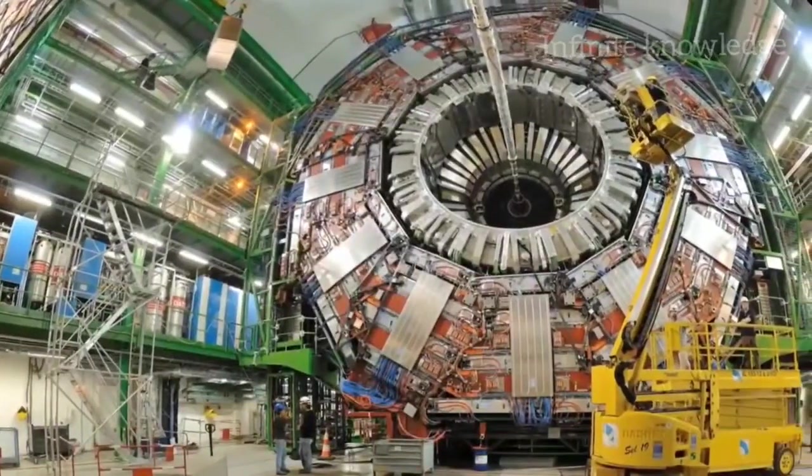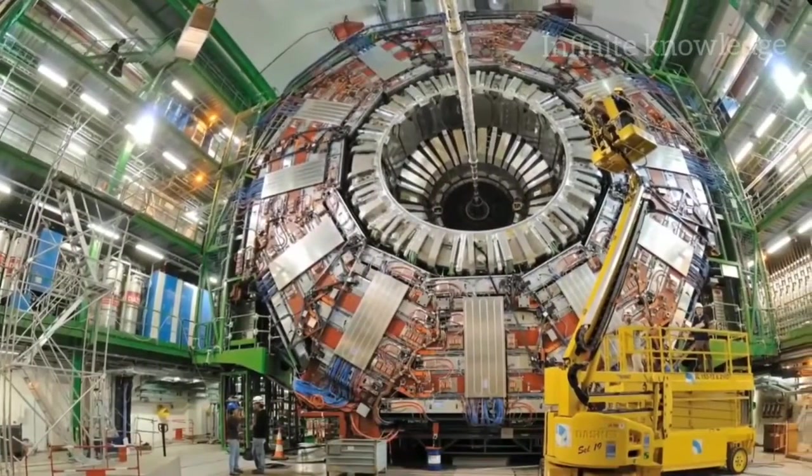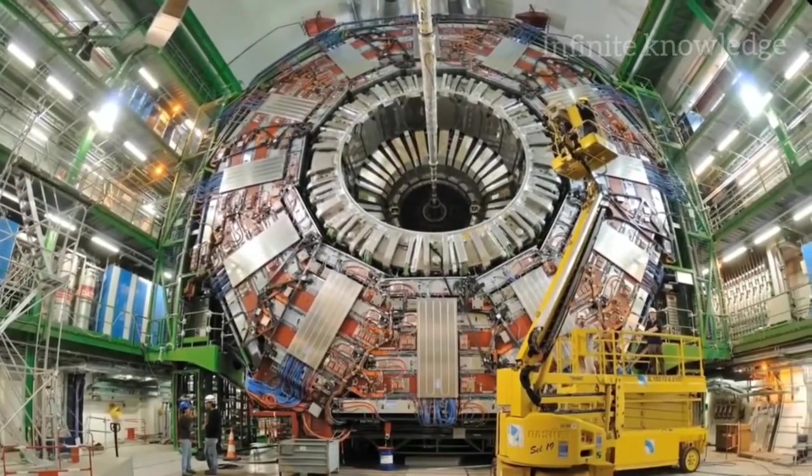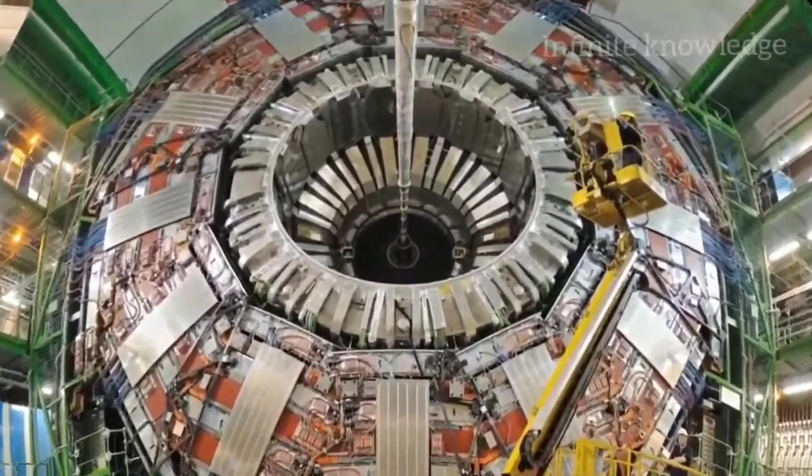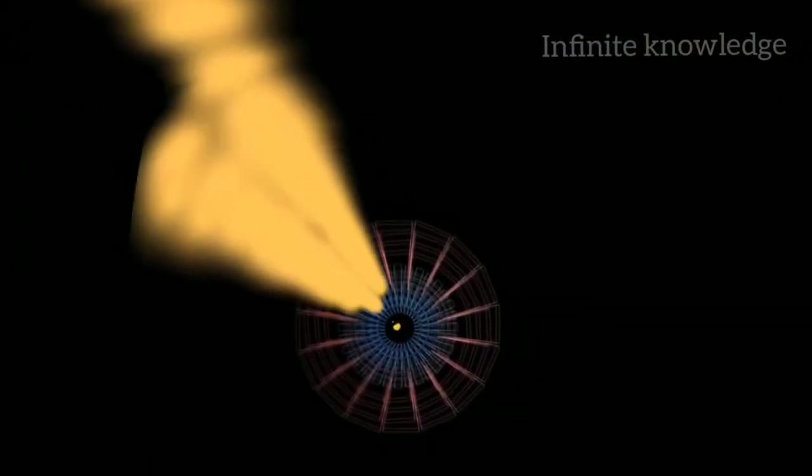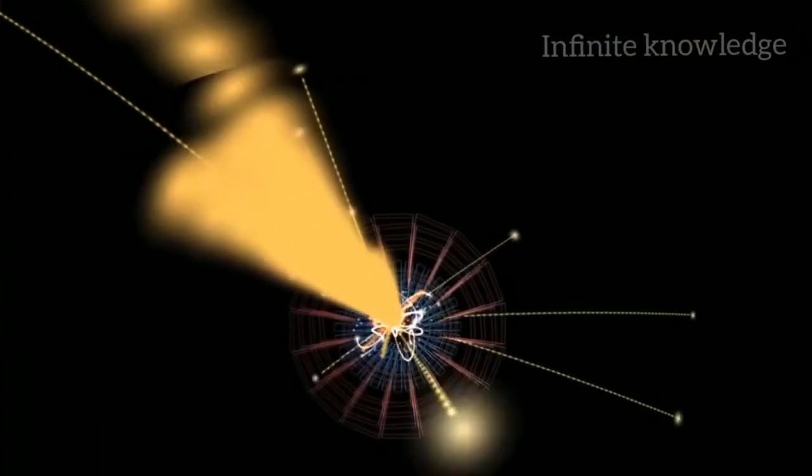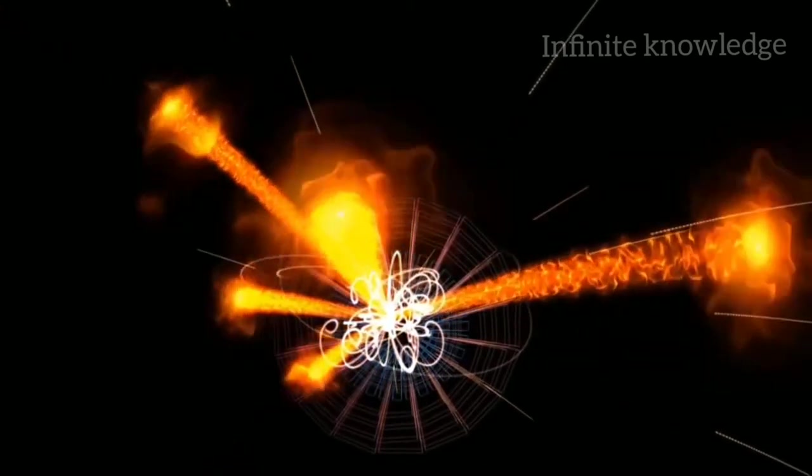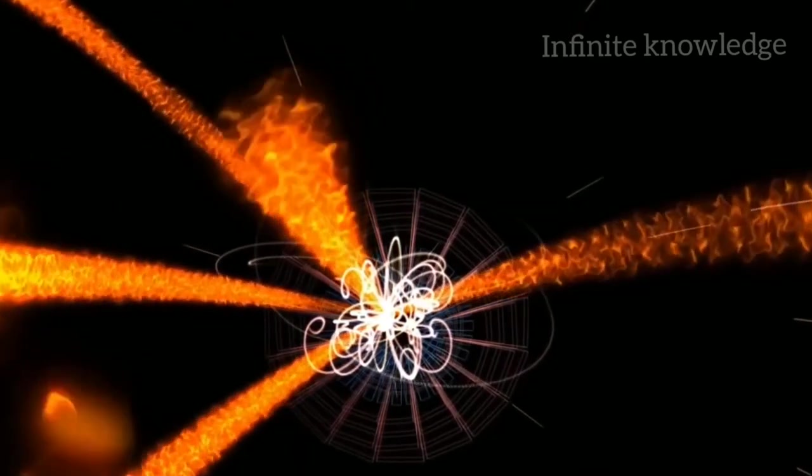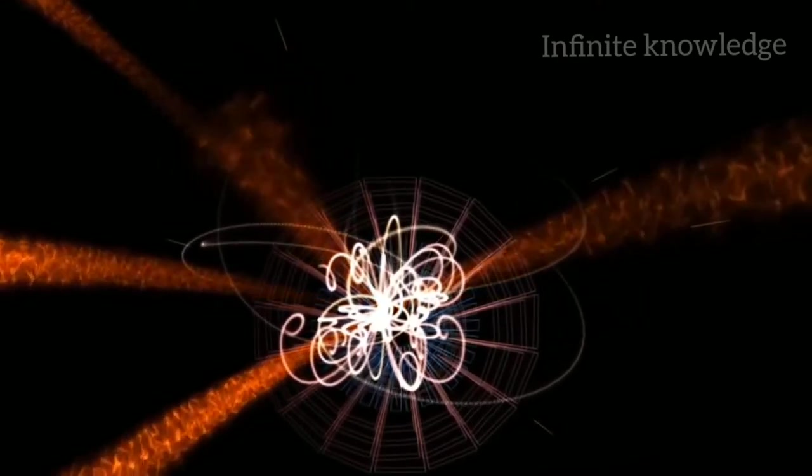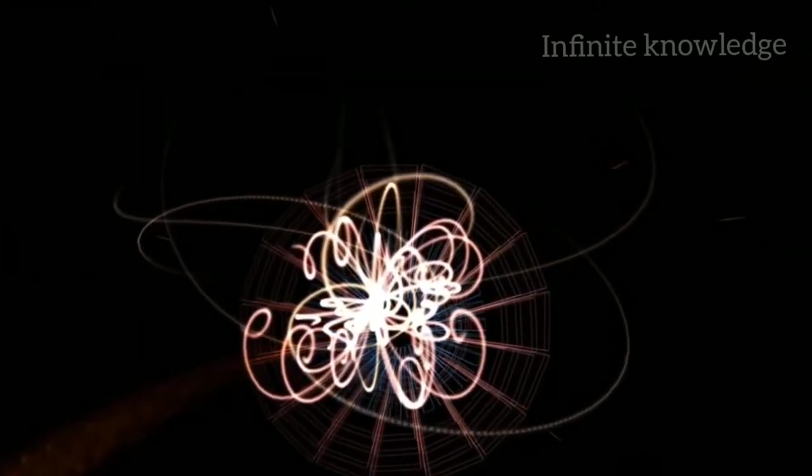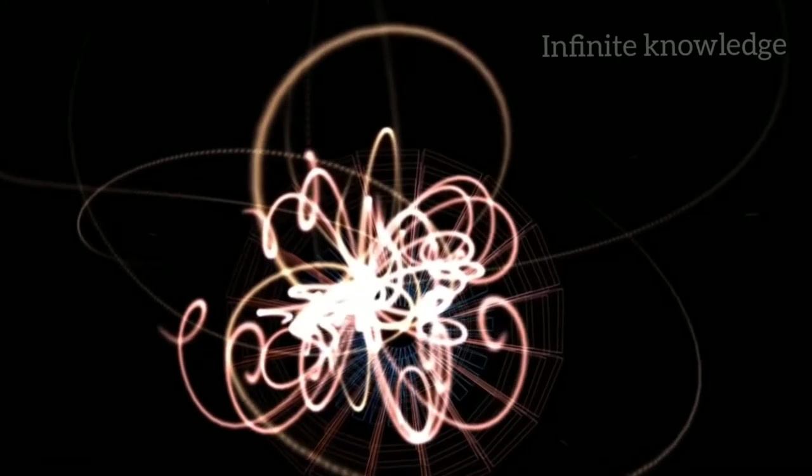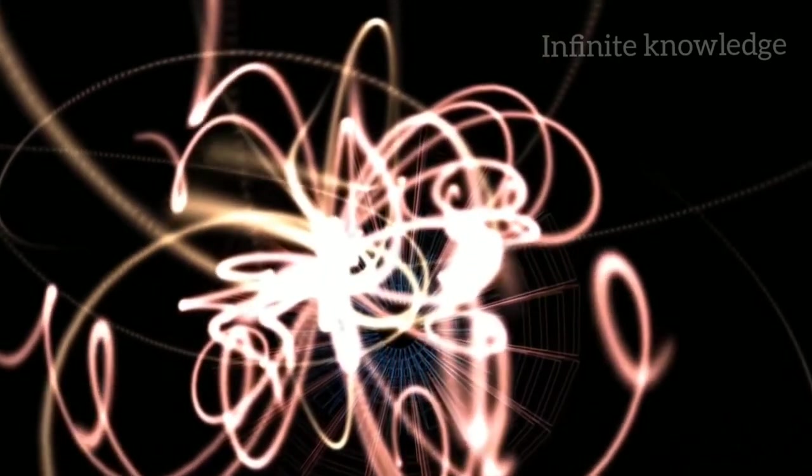The Large Hadron Collider lies in a tunnel below the border between France and Switzerland. A magnetic field 100,000 times stronger than Earth's bends the paths of charged particles emerging from high-energy collisions. The curved tracks of these particles reveal their mass, charge, and energy.